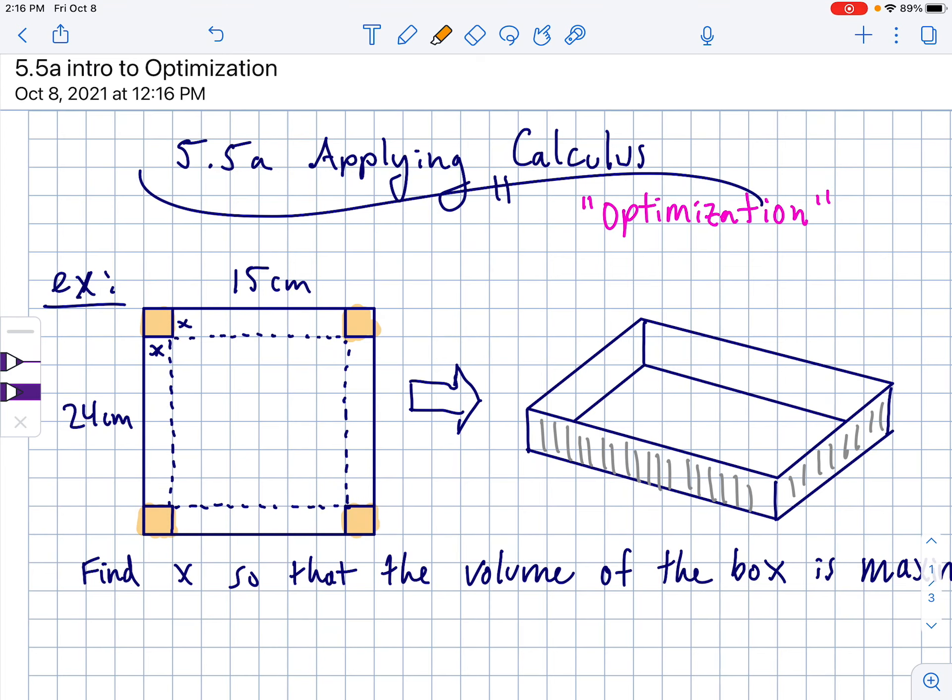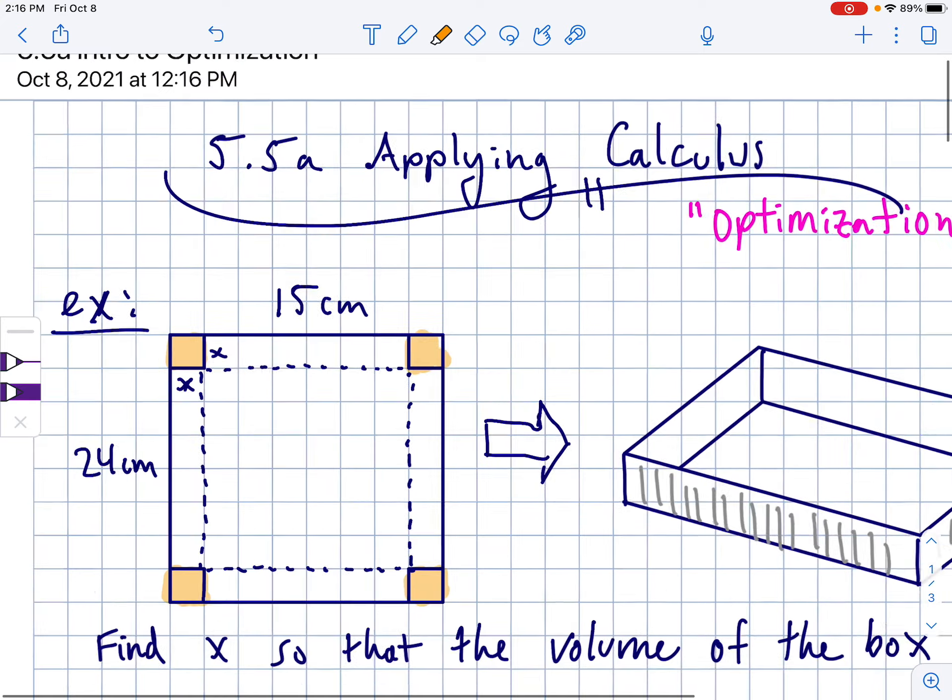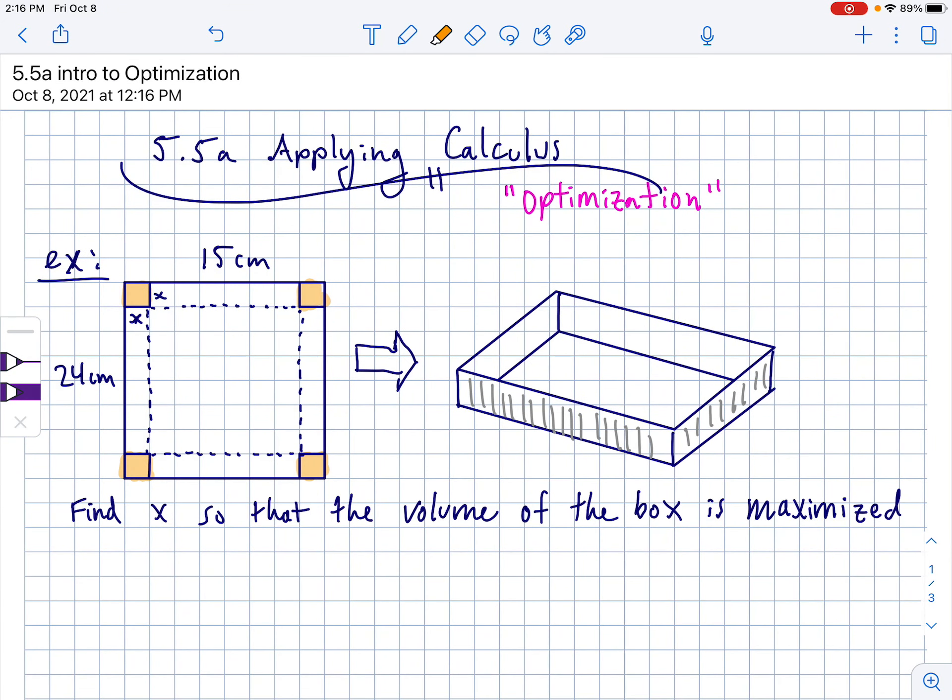Then you're going to cut these corners out of it. So you're going to cut a corner out of all four corners and the corners we are going to call x by x. So once you cut those orange corners out, you're then going to fold up the sides along these dotted lines and then when you fold it, it will look like this diagram right here. So depending on how big you cut those corners, it will change the volume of the box.